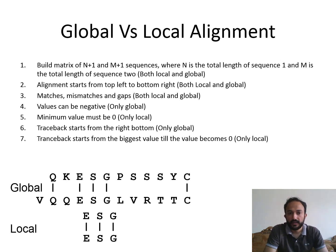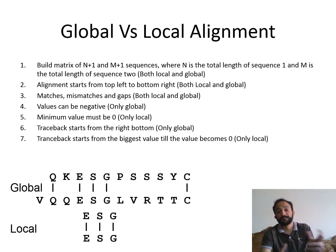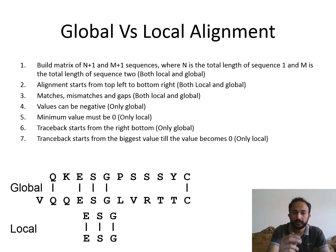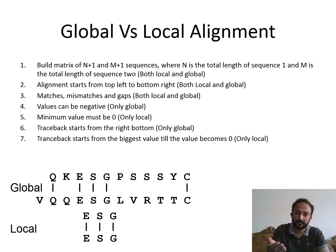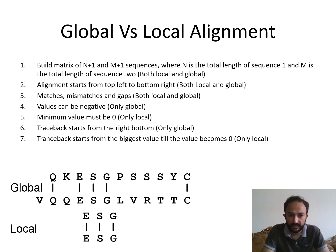Matches, mismatches, and gaps: good score for matches, penalties for mismatches and gaps — this is similar in both global and local alignment. But there are a few differences. In global alignment the value can go negative if we keep adding gaps, but in local alignment we do not add negative values. If the value is going negative due to a lot of gaps in a dissimilar region, we simply insert zero instead.